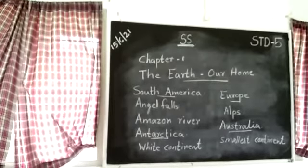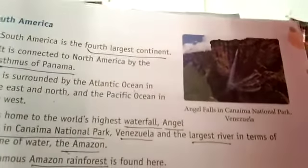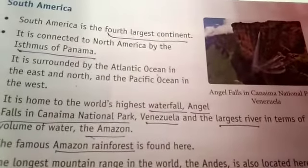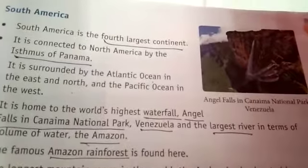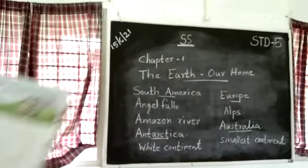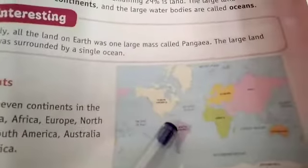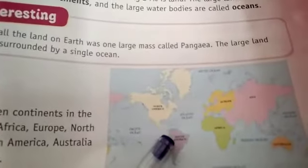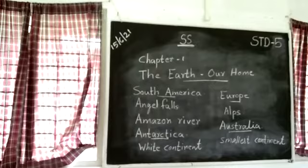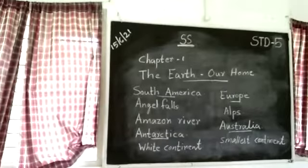South America is the fourth largest continent. It is connected to North America by the Isthmus of Panama. Look at this map — you can see North America and South America connected. It is surrounded by the Atlantic Ocean.